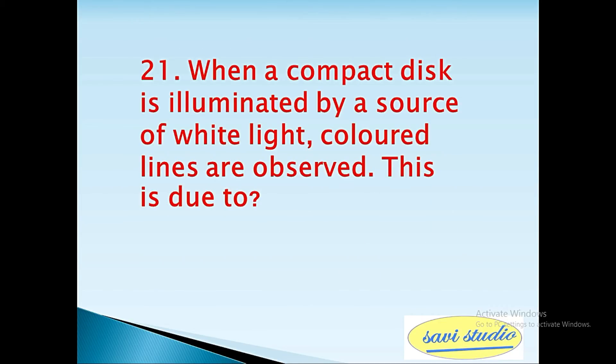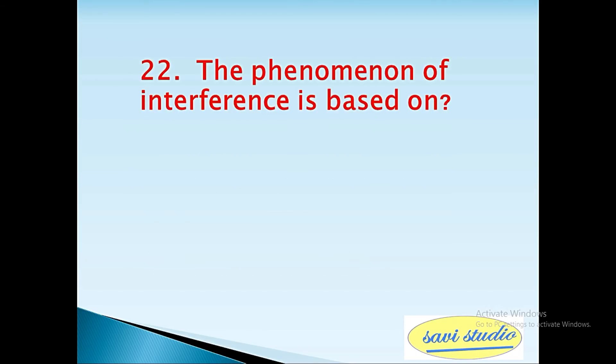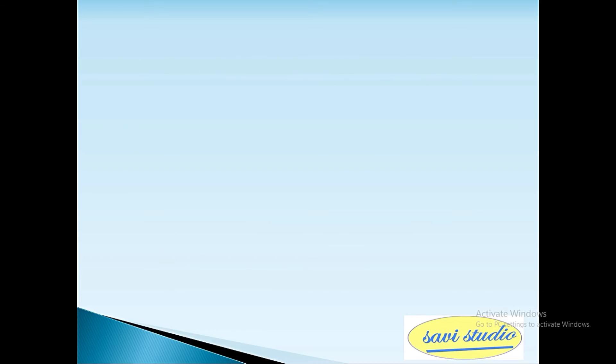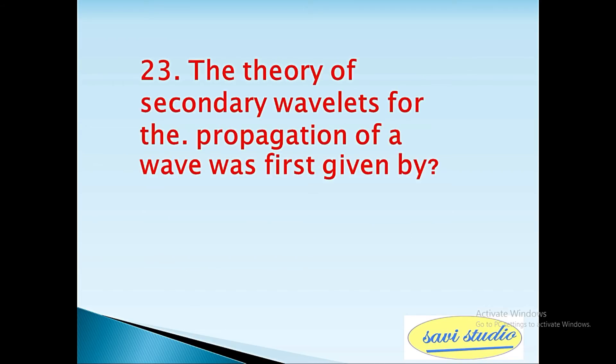21st question: When a compact disc is illuminated by a source of white light, colored lines are observed. This is due to? Answer: diffraction. 22nd question: The phenomenon of interference is based on? Answer: conservation of energy. 23rd question: The theory of secondary wavelets for the propagation of wave was first given by? Answer: Huygens.